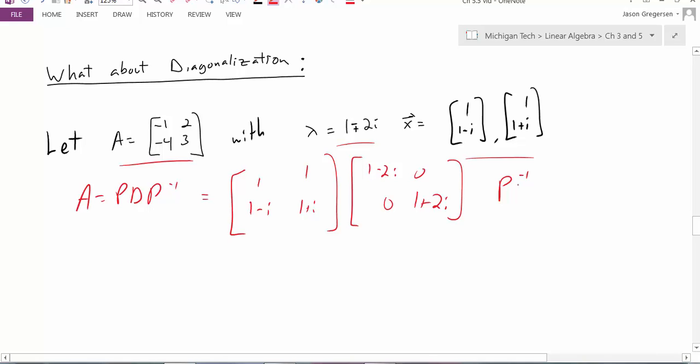So part of the advantage of having a diagonalization is allowing us to see inside what the transformation was really doing in terms of the diagonal matrix. But here, I don't really know what it means to scale some vector by 1 minus 2i. So these complex values really hide the meaning.